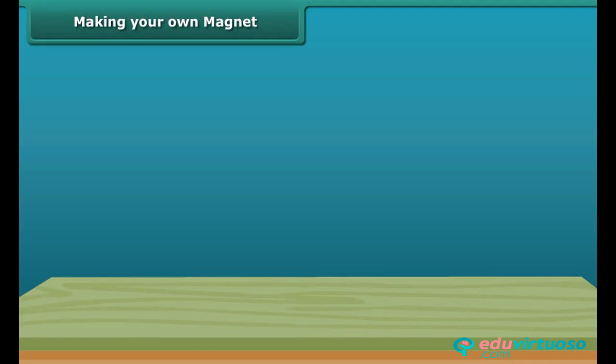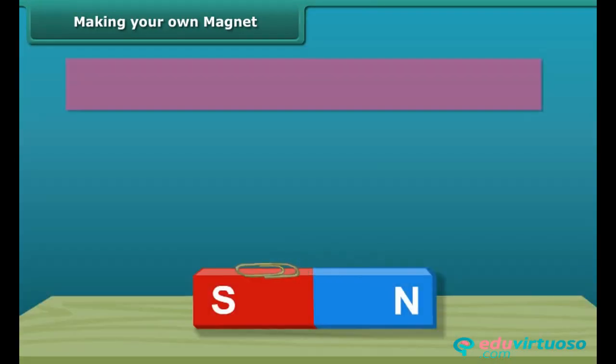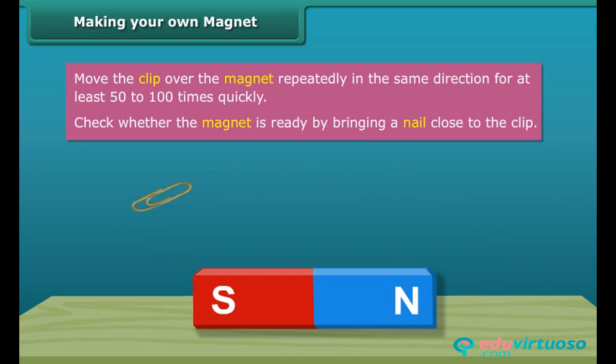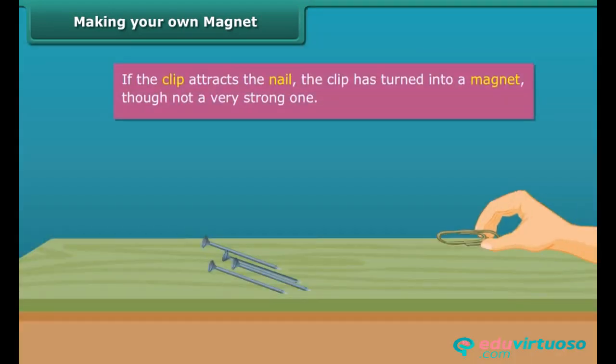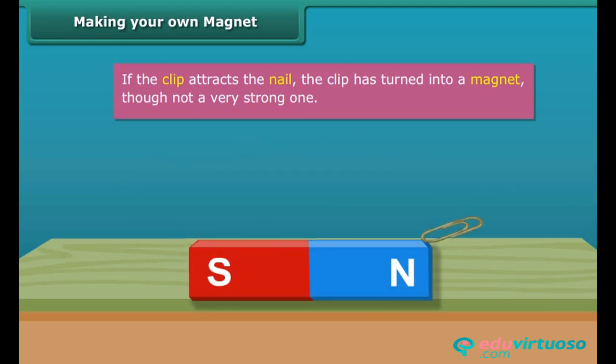Let us look at the steps to create your very own magnet. Let us take a paper clip. Use a thick and strong magnet. Move the clip over the magnet repeatedly in the same direction. Perform this step 50 to 100 times. The movement needs to be quick. Now to check whether the magnet is ready, bring a nail close to the clip. If the clip does not attract the nail, then continue this same process for some more time. Keep in mind that the pole of the magnet and the direction of its movement should not change.